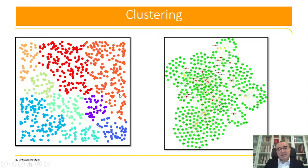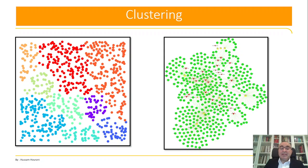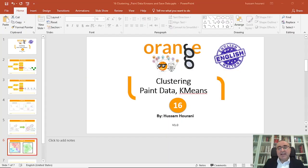But what about data sets where you cannot easily identify the clusters by eye? Because of cases like this, we actually use clustering — to identify the proper clusters for our data so we can then build on them and identify solutions for each cluster.